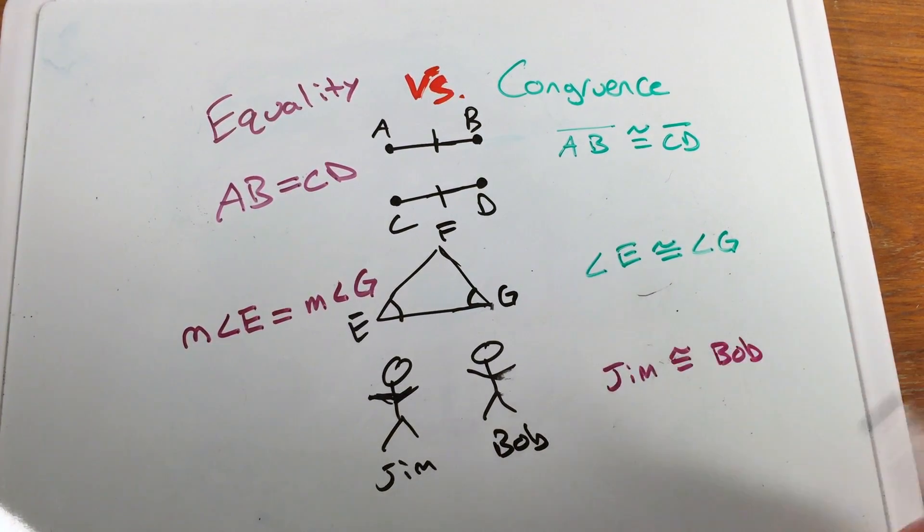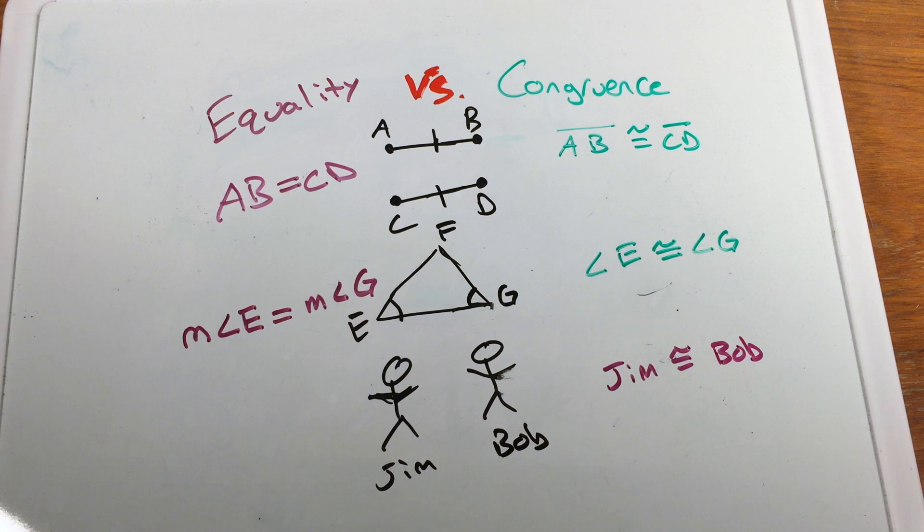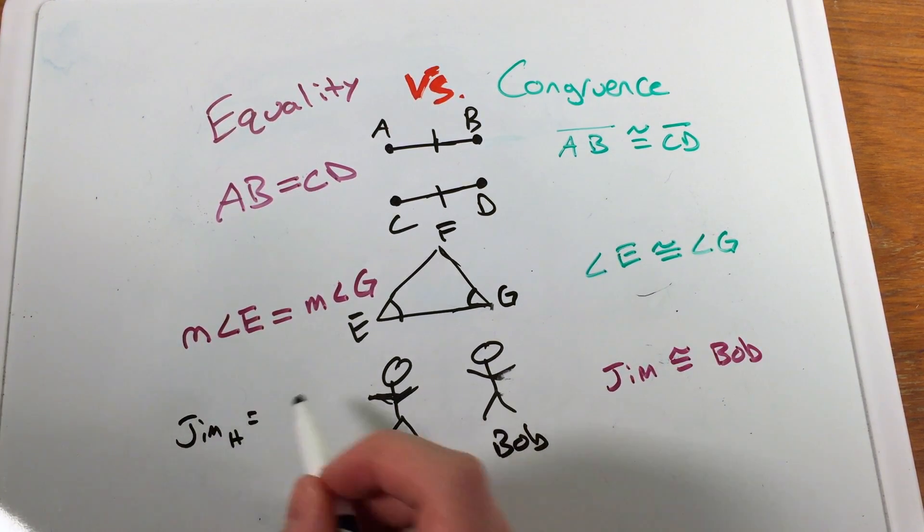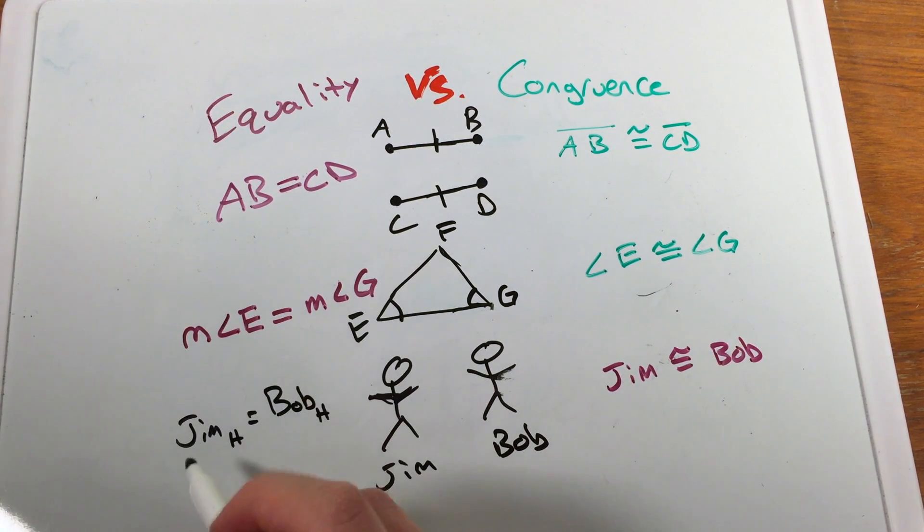But if I want to refer to... I can't actually say they're equal because they're two separate people or two different people. They are not equal, but their measurements are equal. We can say the height of Jim, so Jim's height is equal to—that's a little h for height I'm just putting there—Bob's height. Those heights are equal, or Jim's weight is equal to Bob's weight.